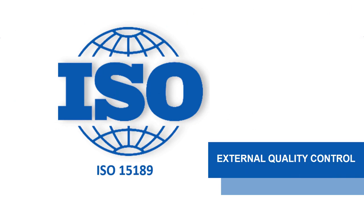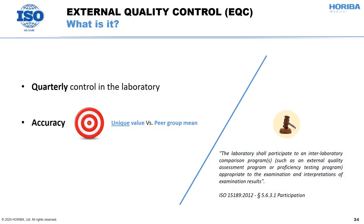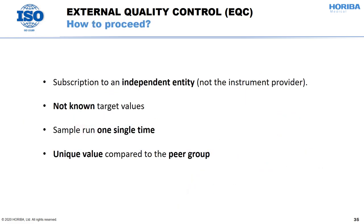The last quality control is the external quality control, or EQC. It is generally done quarterly and allows to specifically assess the accuracy. The EQC is also a requirement for the ISO 15189 standard. The laboratory will receive a control sample from an entity independent from the instrument provider, without delivering any target value. So the laboratory will run a blind test and only know the target value after having sent its results. It will send only one unique value to be compared to the peer group.